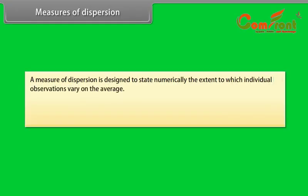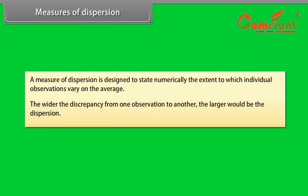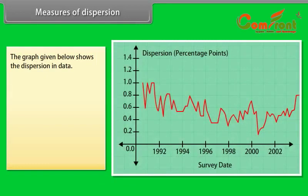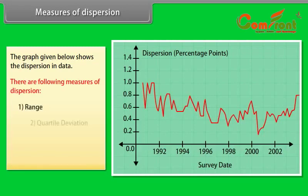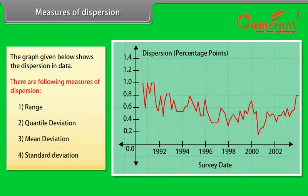Measures of Dispersion: A measure of dispersion is designed to state numerically the extent to which individual observations vary on the average. The wider the discrepancy from one observation to another, the larger would be the dispersion. There are following measures of dispersion: Range, Quartile deviation, Mean deviation, and Standard deviation.